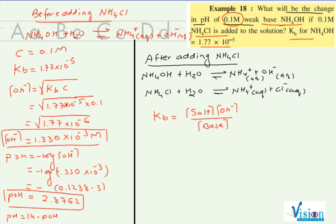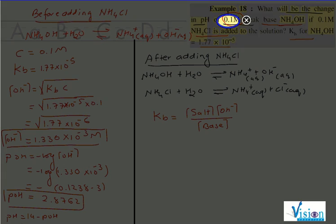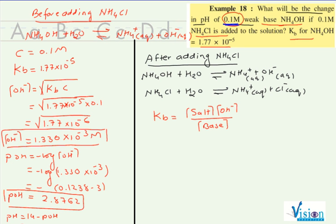We see carefully over here. Your base concentration is 0.1. Salt is NH4Cl, its concentration is also taken as 0.1. And KB value they have given directly. We just need OH minus. Let's substitute this value.